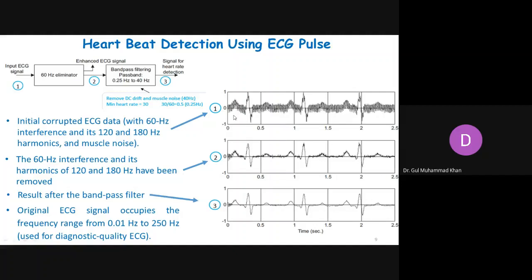You can download any ECG signal from the internet and then corrupt it. You create a 60 Hz signal and a 120 Hz signal and add these frequency signals to the given signal, mixing them together. Then you pass it through filters to get the desired response. In today's lab experiment, we will design a notch filter, get the ECG signal from the internet, plot it, corrupt it with 60, 120, and 180 Hz, and then pass it through different filters.